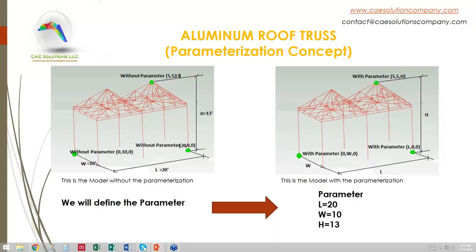On the right is the same model without numerical values; such parameters are shown as L equals 20, W equals 10, and H equals 13 feet. Each parameter on the left has its literal value in parentheses on the right. The parameters are (0, W, 0), (L, 0, 0), and (5, 5, H).